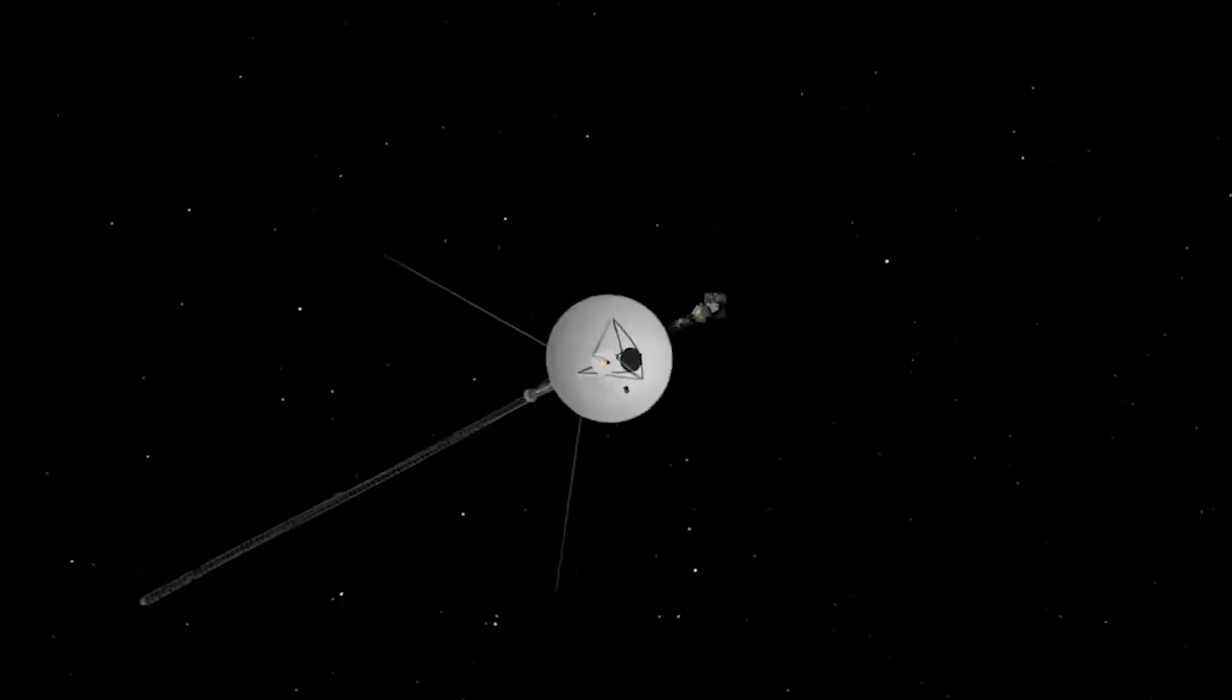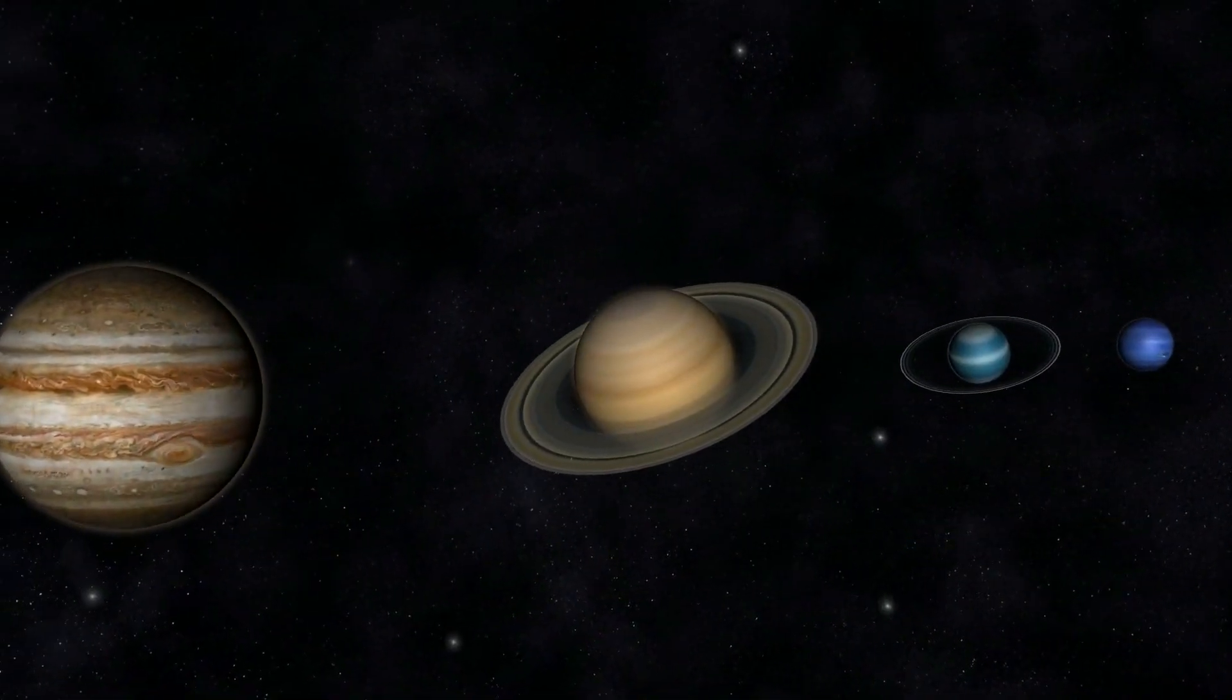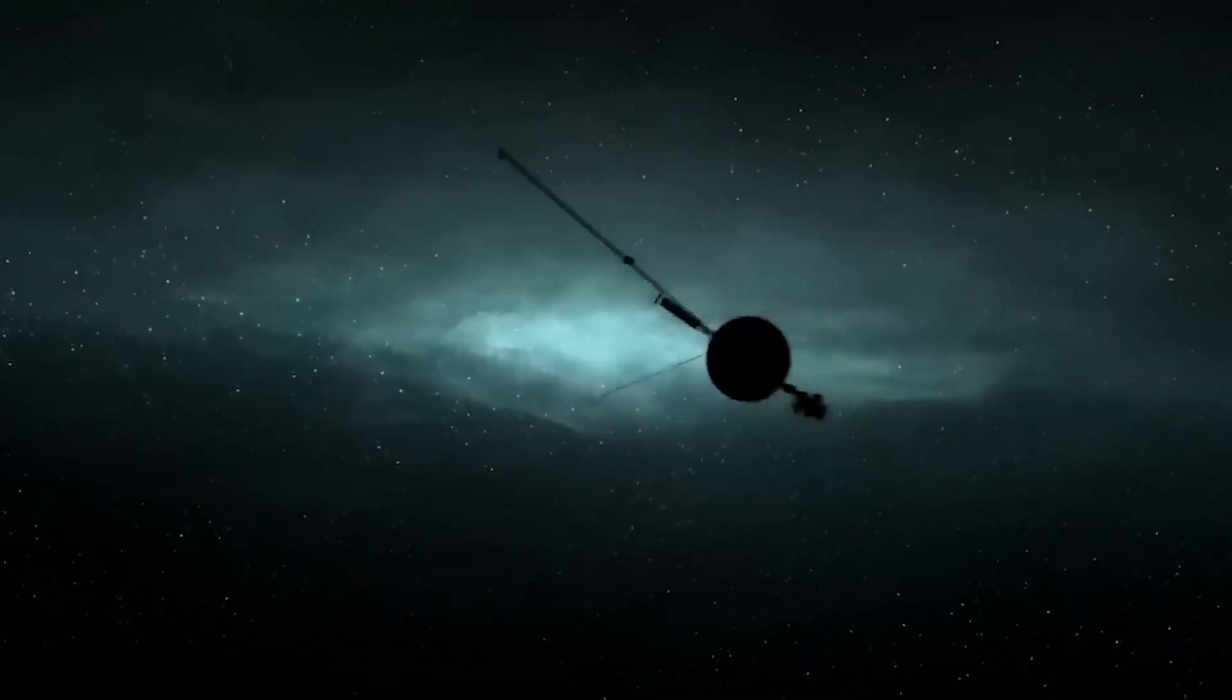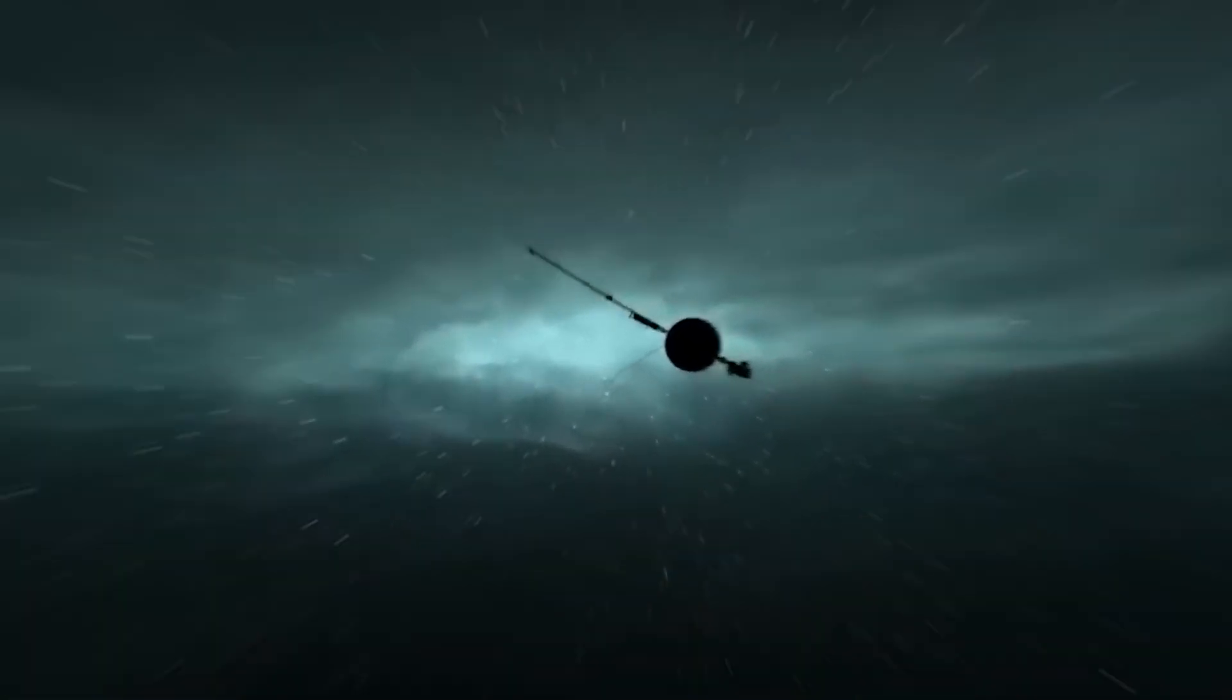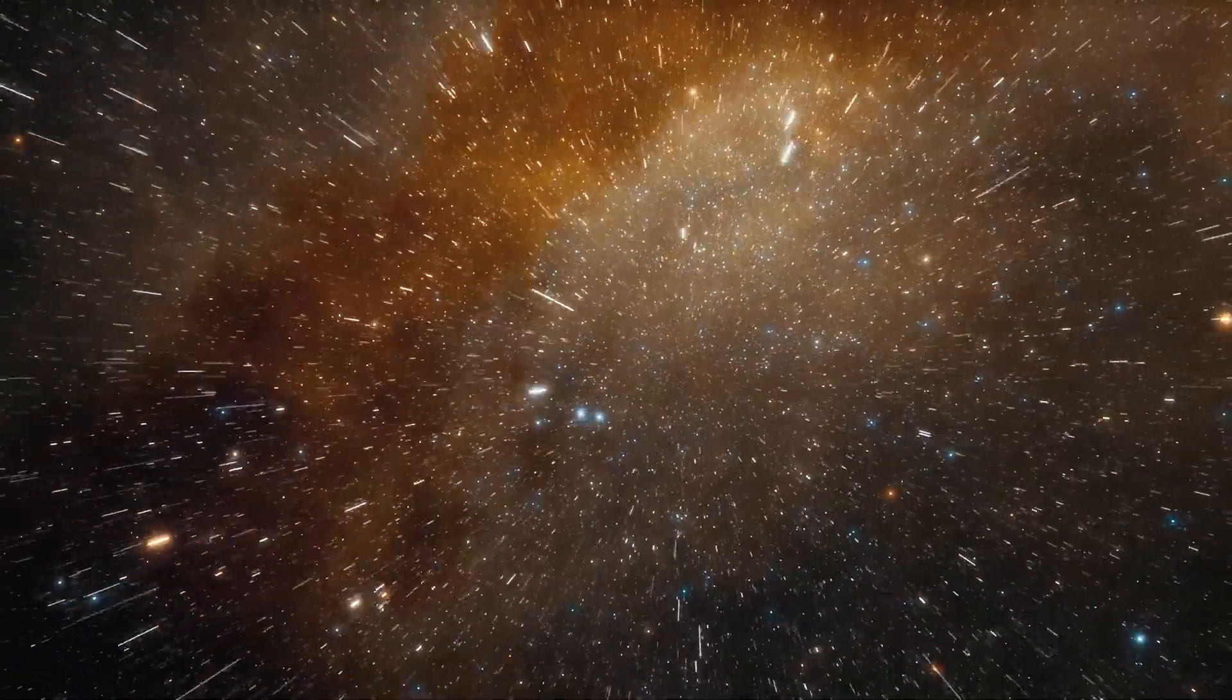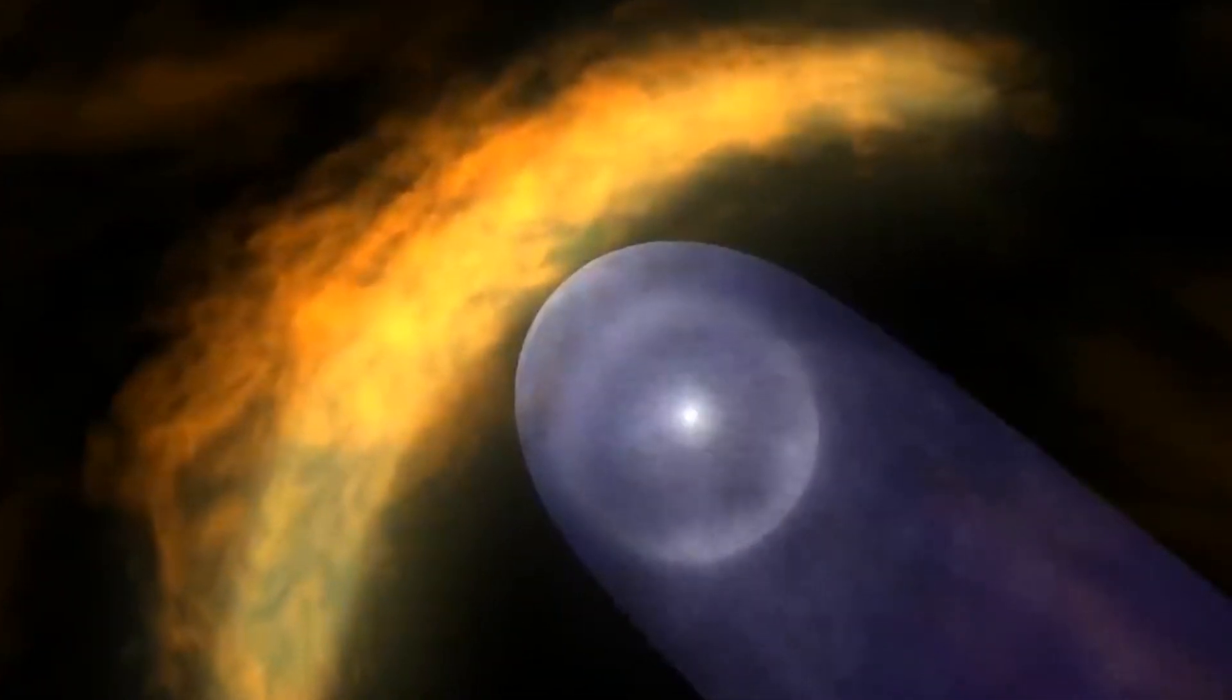Over the course of their journey, the Voyagers have sent back a wealth of data and images, revolutionizing our understanding of the outer planets and their complex systems. But the Voyager's mission didn't stop there. As they continued on their journey beyond the edge of our solar system, the spacecraft provided invaluable insights into the nature of interstellar space, the heliosphere, and the cosmic environment beyond our own backyard.